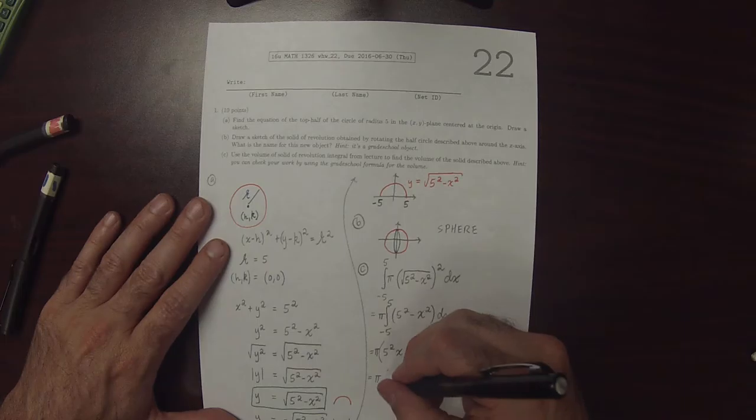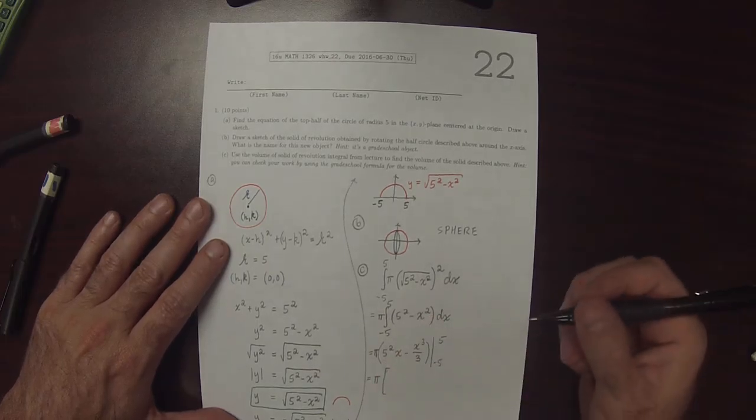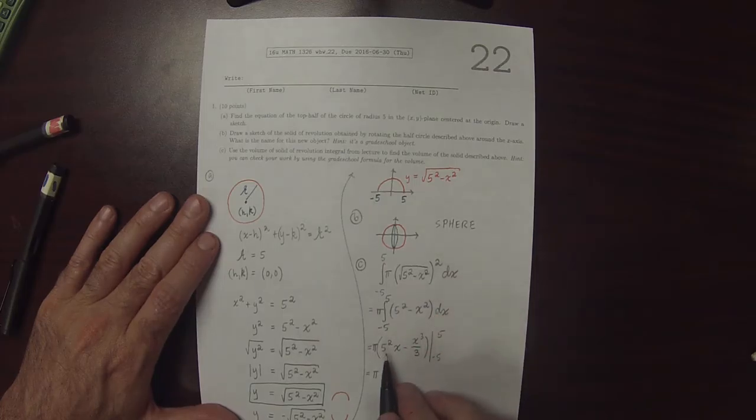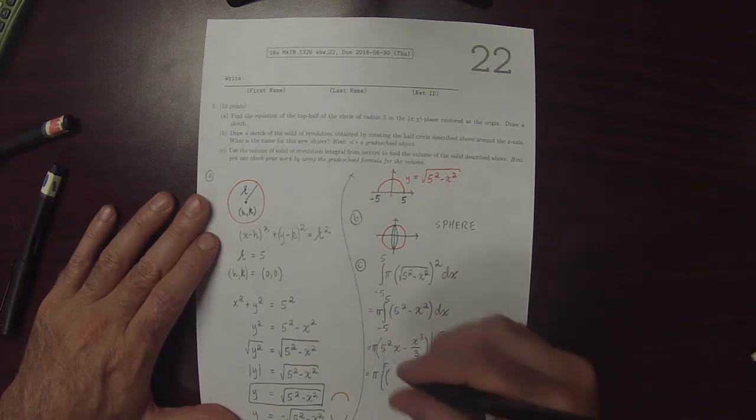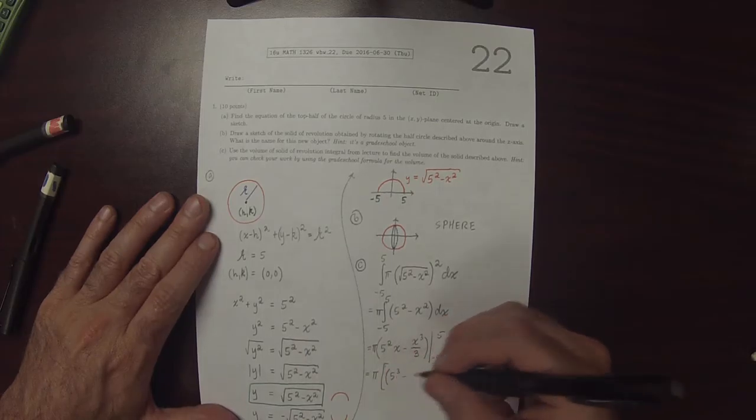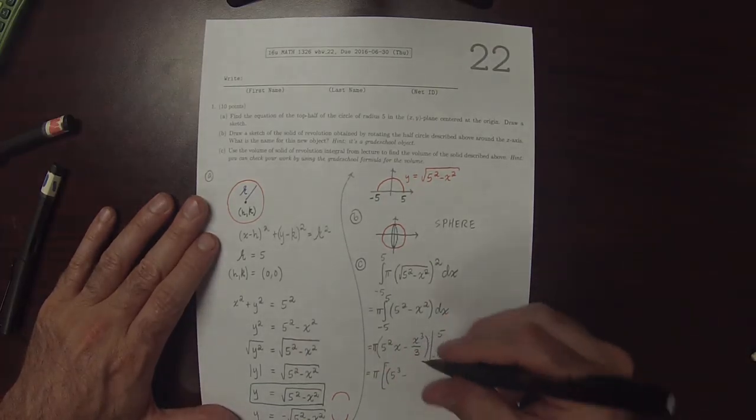So that would be pi multiplied by, now plugging in 5, so this would be 5 squared times 5, so that's 5 cubed minus 5 cubed over 3.